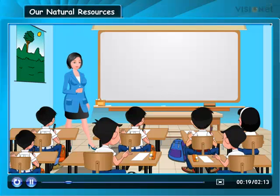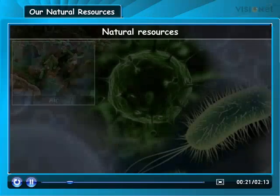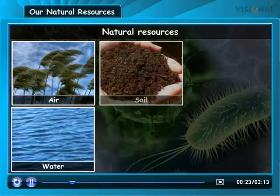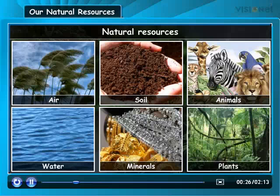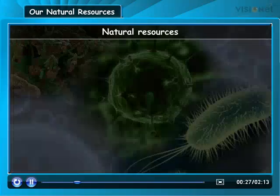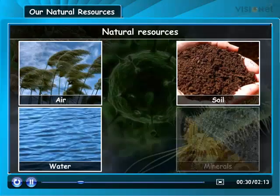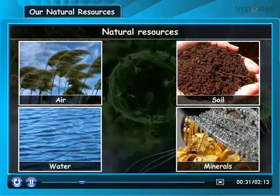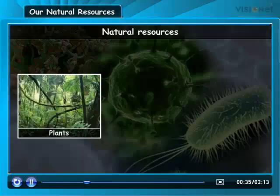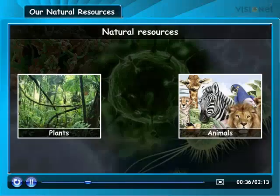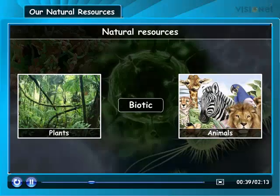For example, the air, water, soil, minerals, animals and plants. The air, water, soil and minerals are the non-living components, or abiotic. While the plants and animals are the living components, or biotic.